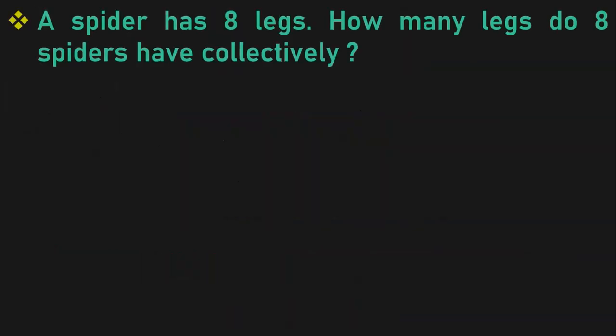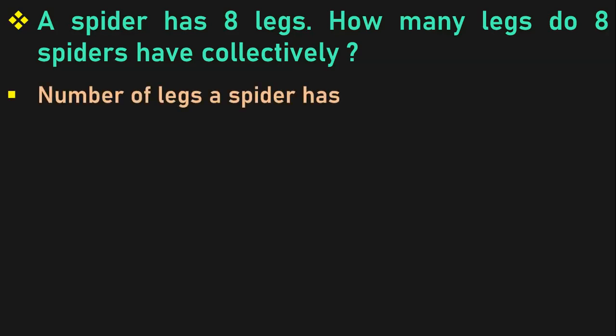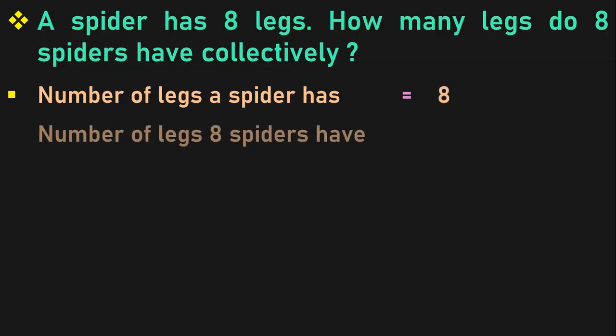The first sum that we are going to do is: a spider has 8 legs. How many legs do 8 spiders have collectively? Let us first write down the statements. Number of legs a spider has is equal to 8. What do we have to find? Number of legs 8 spiders have. So it will be 8 into 8. In class 3, children would have learned the 8 tables, so they will know that 8 into 8 is 64.